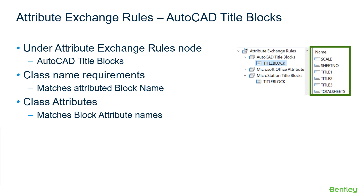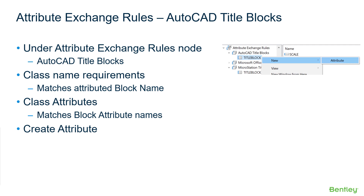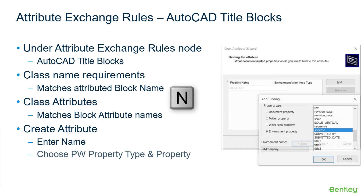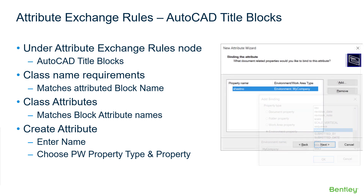The attributes contained in the AutoCAD title block class must have names that match the attribute attached to the block definition in the drawing. To create an attribute, right-click on the attribute class node representing the block definition and choose New Attribute to start the attribute wizard. Enter a name for the attribute — for example, sheet_NO — which will be the name of the attribute in the block definition. Click Add to choose the ProjectWise property type and property to bind to this attribute. For example, sheet_NO attribute will be bound to the MyCompanyEnvironment sheet NO attribute. Once the ProjectWise property is chosen, it cannot be changed; to make adjustments, highlight the property, click Remove, then click Add again.